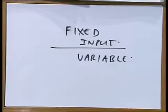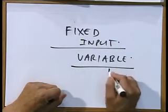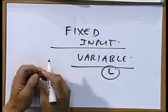At least one input is fixed — that is our capital, for example, or the land. And then we assume that the variable input was labor. So what we have done in the short run is we have combined the fixed input with the variable input, with labor. We have employed more labor.